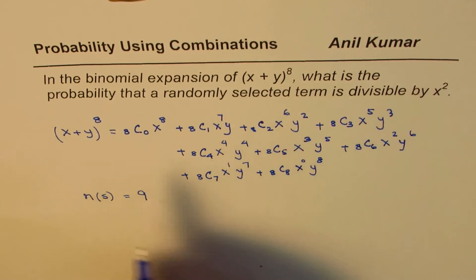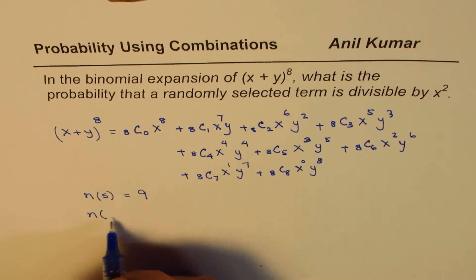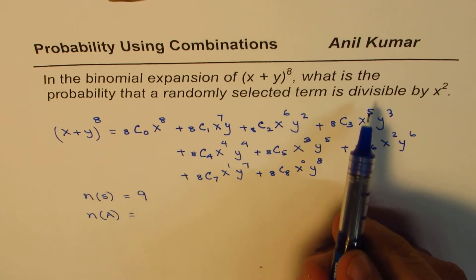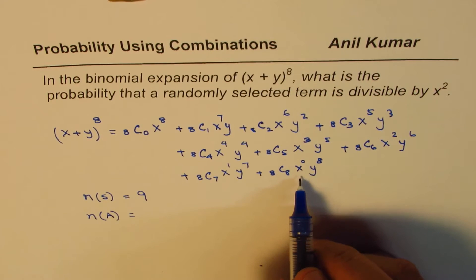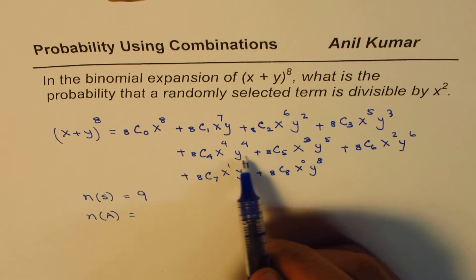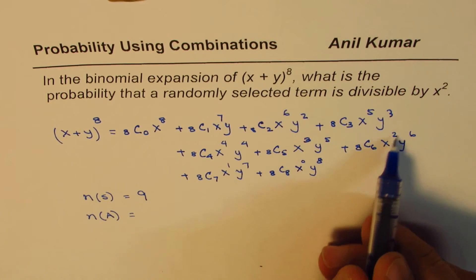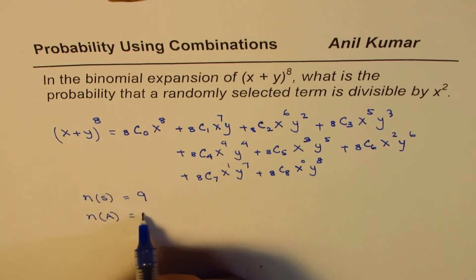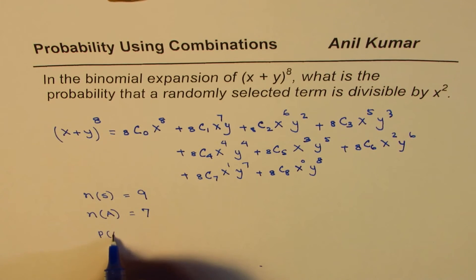Now we need to find how many are divisible by x square. Let's call this A, the event which is number of terms divisible by x square. Can you divide this one? No. Can you divide this one? No. You can divide all these terms by x square, the degree should be same or higher. So these are 2 less than 9 which is 7.